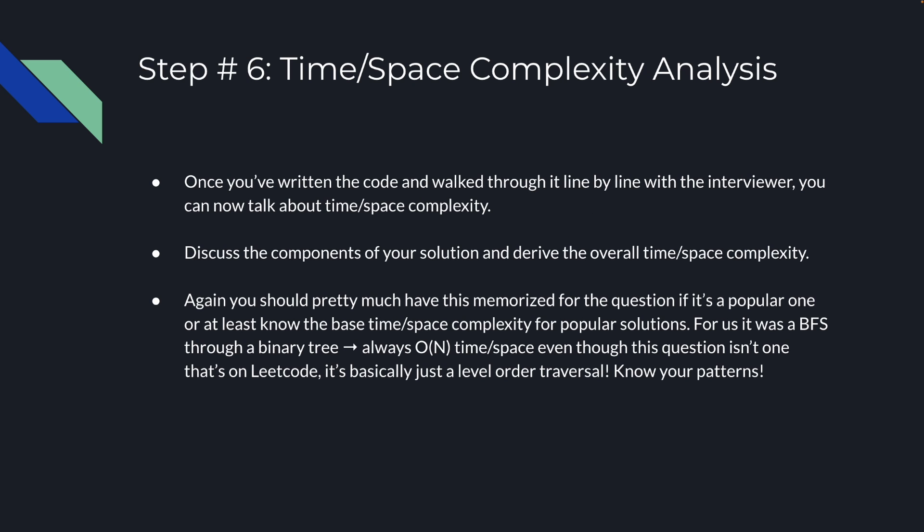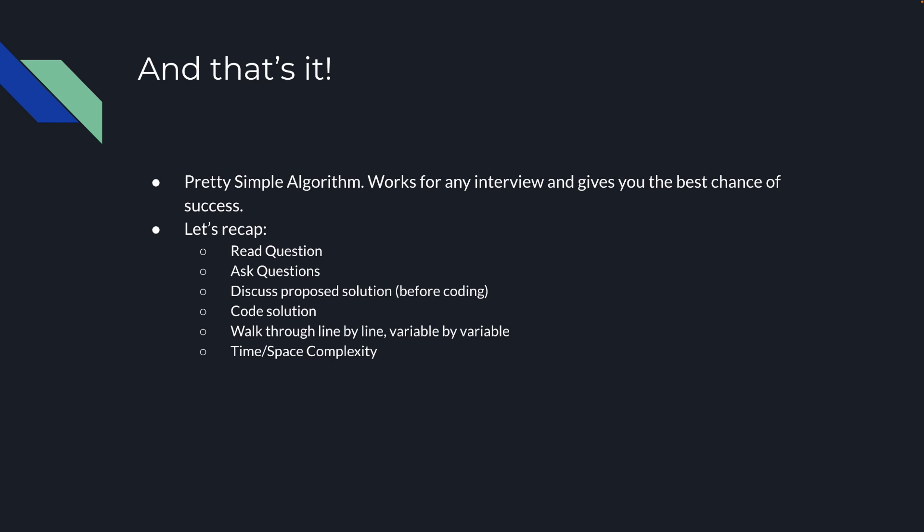Step 6: time and space complexity. After the walkthrough, discuss the components of your solution and derive the overall complexity. You should have this memorized for popular question types. For us this was a BFS through a binary tree — always O(n) time and O(n) space. Know your patterns because they come up a lot even if the questions aren't identical. To recap: read the question, ask questions, discuss your proposed solution before coding, code it, walk through line by line, then talk about time and space complexity.